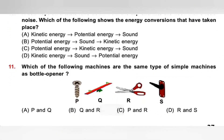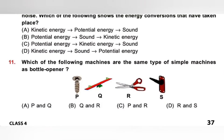Eleventh one: Which is the same type of simple machine as a bottle opener? P: Screw, Q: Seesaw, R: Scissor, S: Doorknob. Bottle opener is a lever. Among the options, seesaw and scissors are levers, screw is an inclined plane, and doorknob is a wheel and axle. Option B — Q and R — are the same type of simple machine as bottle opener, i.e., lever. Option B is the correct answer.